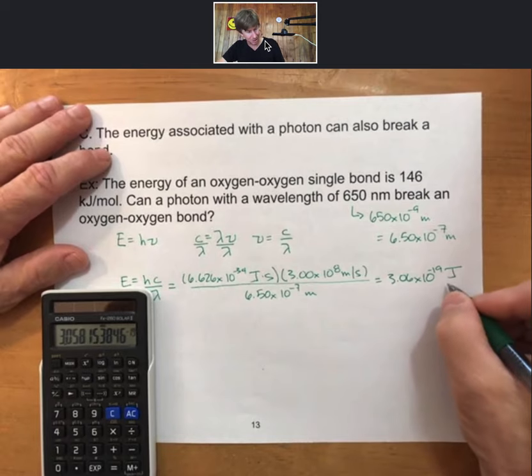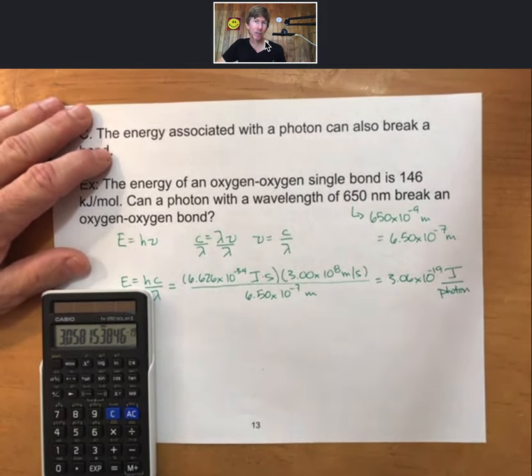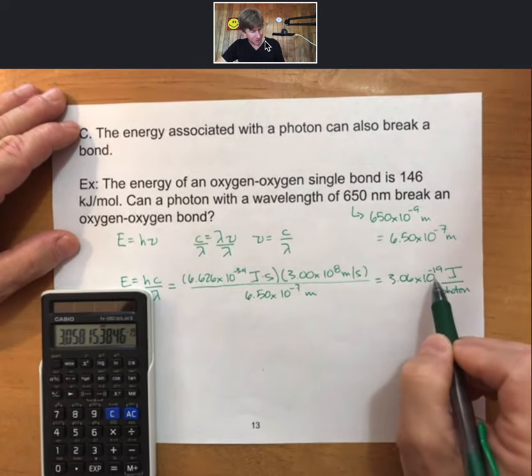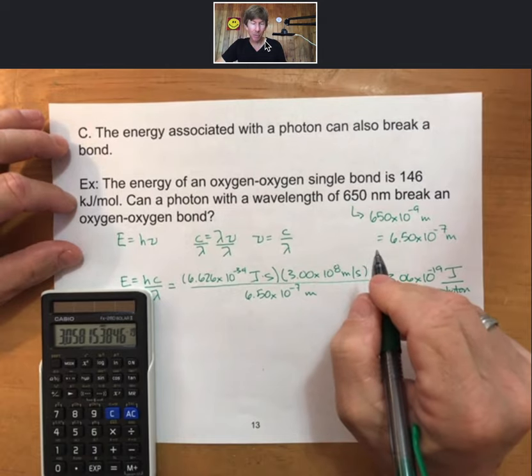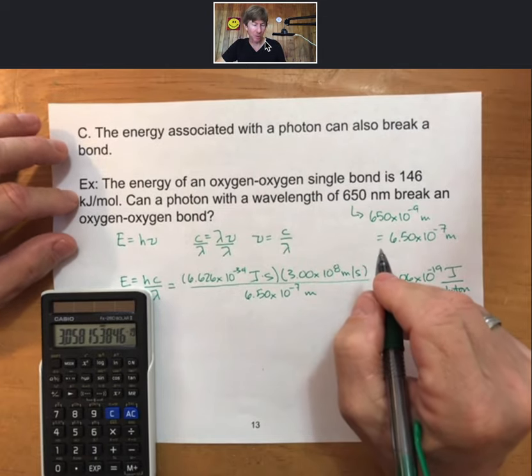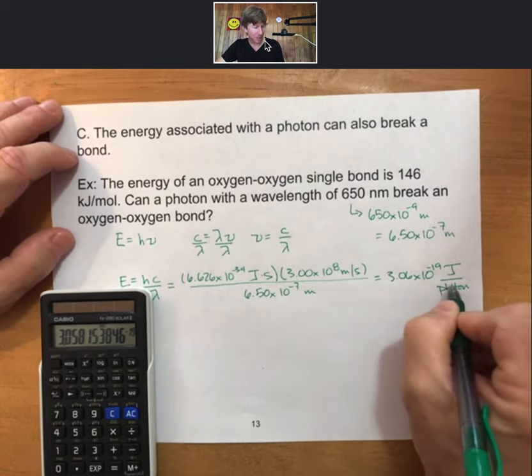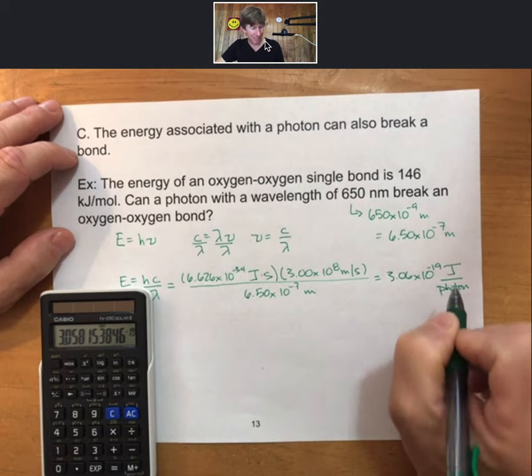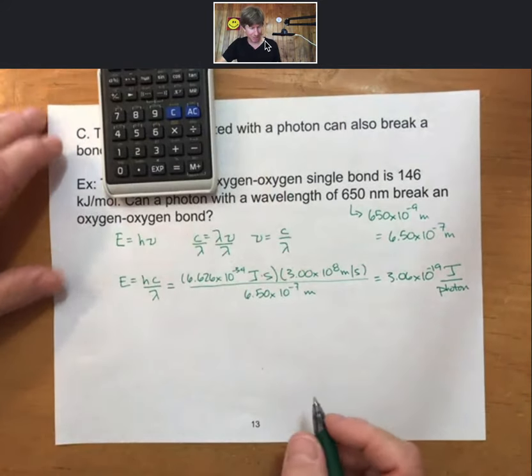Times 10 to the minus 19. That's joules. That's the only set of units we get from this calculation. But as we mentioned just prior, that is the energy of one photon. So joules per photon. So that's how much energy is in a photon. We know that it takes 146 kilojoules per mole, and that's per mole of oxygen-oxygen single bonds. What we next need to do is find out how much energy is stored in one mole of photons to see if they can break one mole of oxygen-oxygen bonds. At least that's the approach we're going to take.